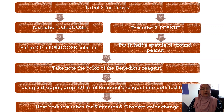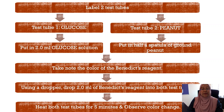This procedure is performed to determine the presence of reducing sugar. Label two test tubes: test tube one for glucose, test tube two for peanut. In test tube one, put in 2 ml of glucose solution; in test tube two, put in half a spatula of ground peanut. Take note of the color of the Benedict's reagent, then using a dropper, add 2 ml of Benedict's reagent into both test tubes. Heat both test tubes for five minutes and observe any color changes.